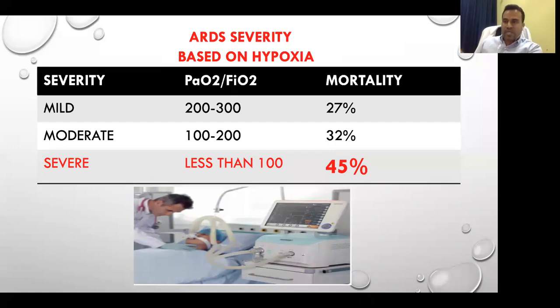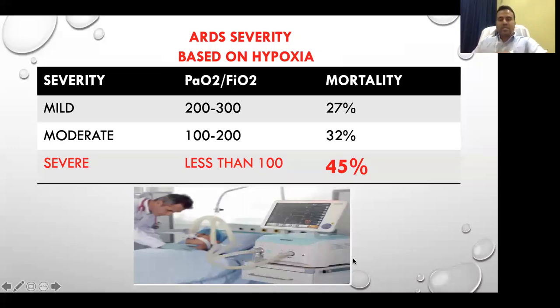If PF ratio is less than 100 — severe hypoxia — half the patients may die, leading to complications like heart failure, liver failure, and lung failure. When it goes to mechanical ventilation, a full team of doctors is very important to manage intubation and ventilator support.